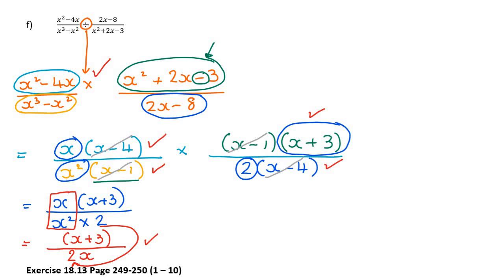A couple of ones for you to try: Exercise 8.13 on page 249, and over the page 250, there are 10 questions. It's a really good revision of all your factorizing. Don't forget you can always come back to your notes or re-watch parts of the video, and please send questions if you have them. That'll be the end of our factorizing section. It's been quite long — we've done three types of factorizing and then a first example of where we use factorizing. We will be using it again, and after this exercise there'll be some mixed revision to tie it all together. Well done!